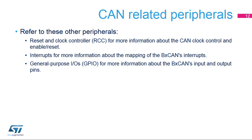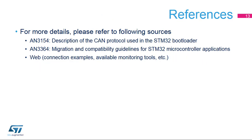Interrupts — for more information about the mapping of the BX CAN's interrupts. General purpose IOs, or GPIO, for more information about the BX CAN's input and output pins. There are a few dedicated application notes on the CAN topic. To learn more about the CAN interface, you can visit a wide range of webpages discussing CAN interface issues and bus monitoring tools. Many digital oscilloscopes support direct reading and analysis of data performed on the CAN bus.